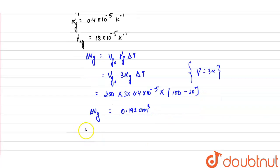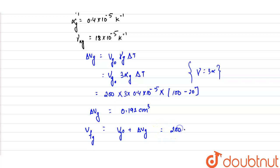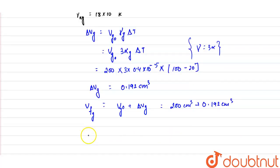The final volume of the glass equals the initial volume of the glass plus the change in volume of the glass. So 200 centimeter cube plus 0.192 centimeter cube gives a final volume of the glass equal to 200.192 centimeter cube.